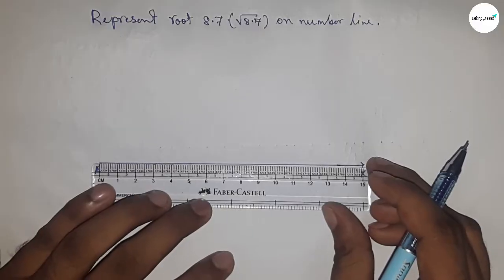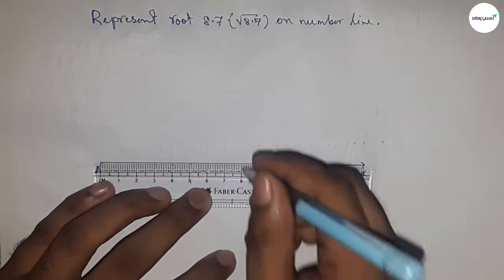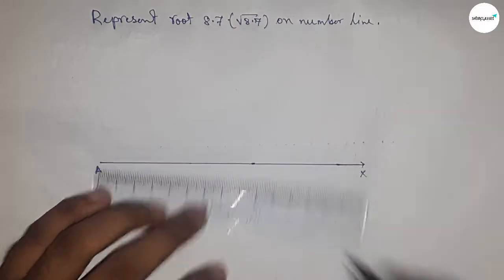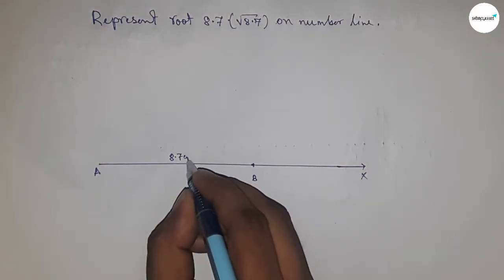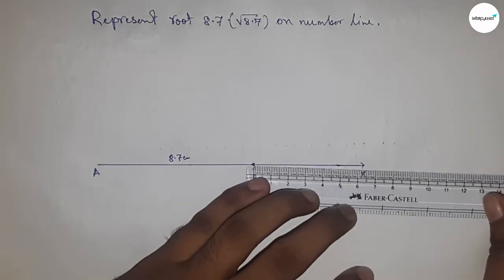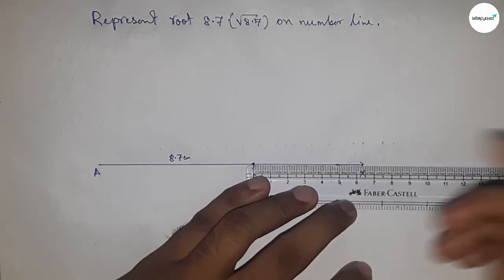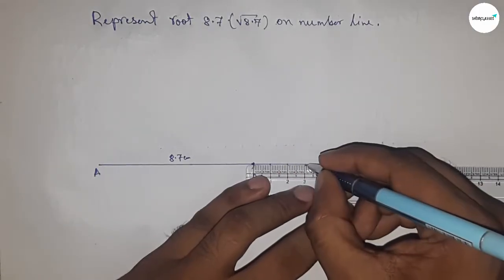Next, take 8.7 centimeter length using a scale, marking this as point B. So AB equals 8.7 centimeters. Now mark the numbers on the line from B to X using the scale.